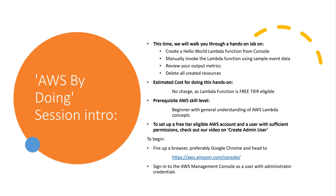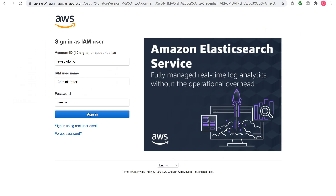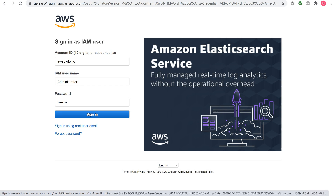To begin, fire up a browser, preferably Google Chrome, and head to aws.amazon.com. Sign in to the AWS Management Console as a user with administrator credentials. In this getting started exercise, you create a Lambda function using the AWS Lambda console.